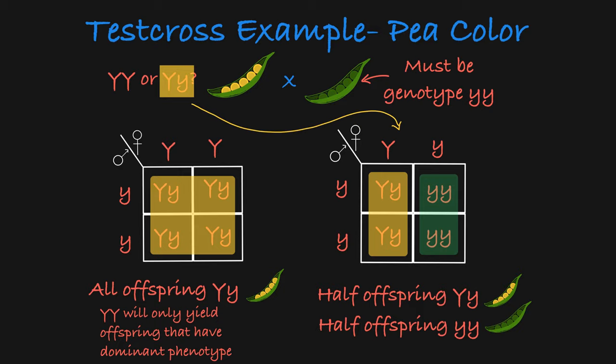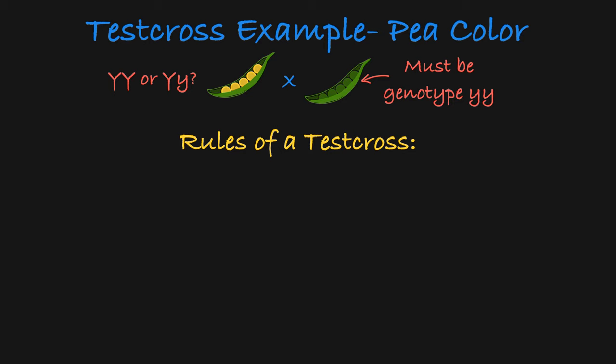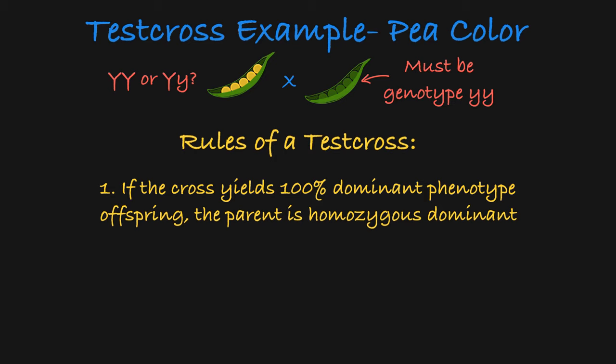So in a test cross, if the cross yields 100% offspring with the dominant phenotype, then you know that the parent is homozygous dominant, as it only passes on dominant alleles to its offspring.